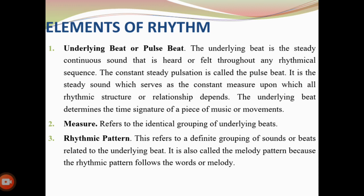Now let's proceed to the elements of rhythmic activities or rhythm. The first element of rhythm is the underlying beat or pulse beat. The underlying beat is the steady, continuous sound that is heard or felt throughout any rhythmical sequence. The constant steady pulsation is called the pulse beat — it is the steady sound which serves as the constant measure upon which all rhythmic structure and relationships depend. The underlying beat determines the time signature of a piece of music or movement.